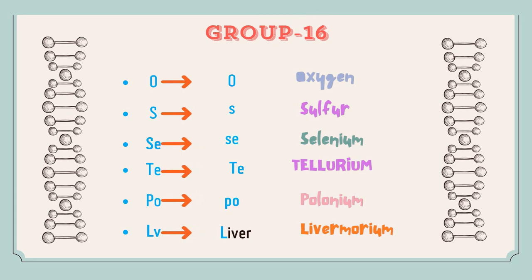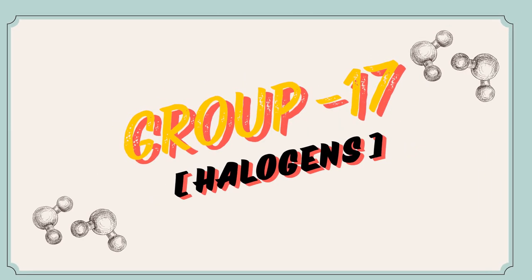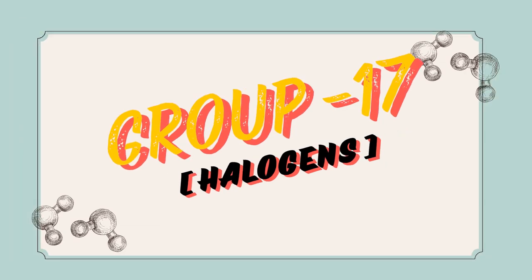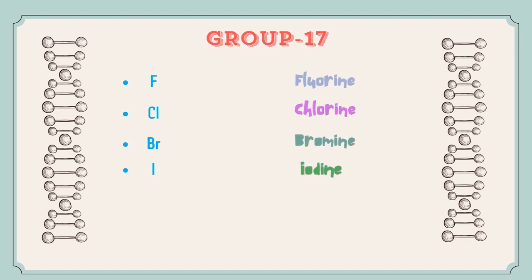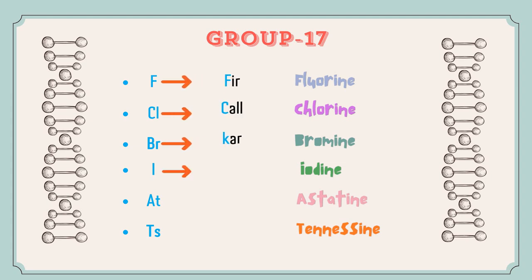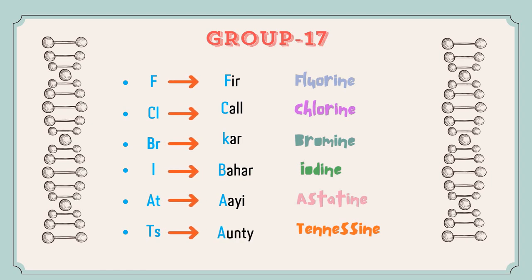Let's move on to the next group, that is Group 17, where all the halogens are present. The elements are Fluorine, Chlorine, Bromine, Iodine, Astatine, and Tennessine. The trick for this is: 'Sir Call Ker Bahar I Ante' — very interesting and simple to learn.